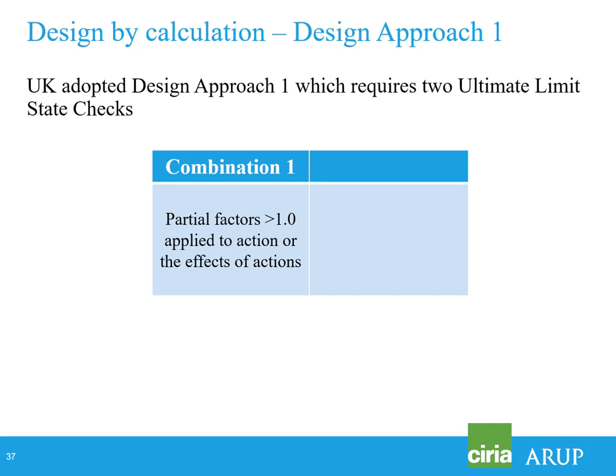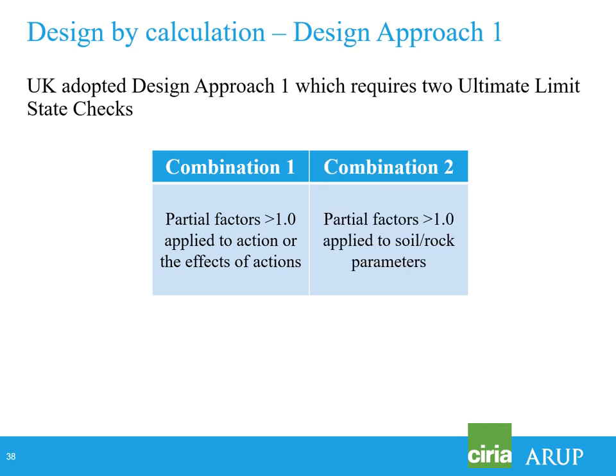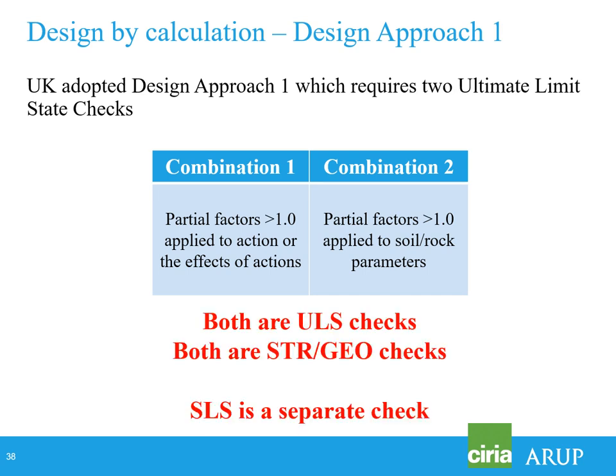The UK adopted Design Approach 1, which requires two checks on ultimate limit states. Combination 1 has partial factors greater than one applied to actions or the effects of actions. Combination 2 has partial factors greater than one applied to soil and rock parameters. One common misunderstanding found during the writing process is that people had different opinions on what the combinations represented — some felt combination 1 was essentially an SLS check and combination 2 was a ULS check. But neither view is correct: they are both ULS checks and both STRU/GEO checks.